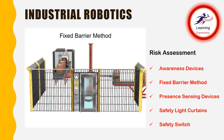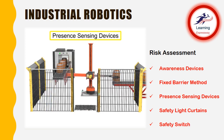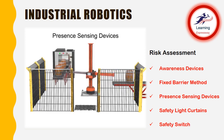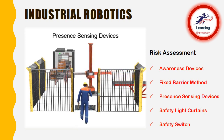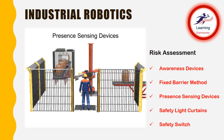Another method of protecting the robot's work envelope employs the use of presence sensing devices. These devices detect the entry of a person into a hazardous area and slow or stop the robot. Pressure mats are typically installed just outside the robot's work envelope. When a person steps on the mat, a signal is sent to the robot to stop or slow work.